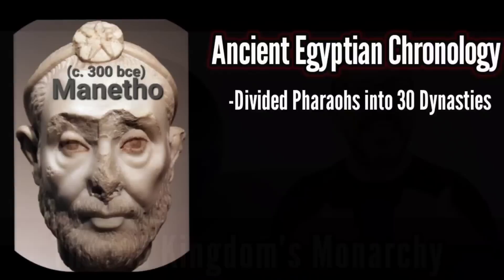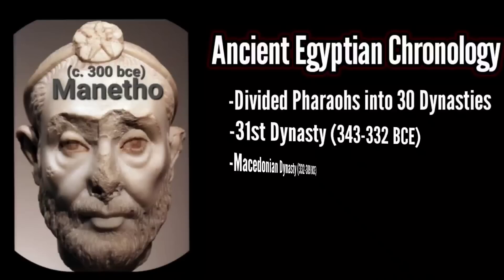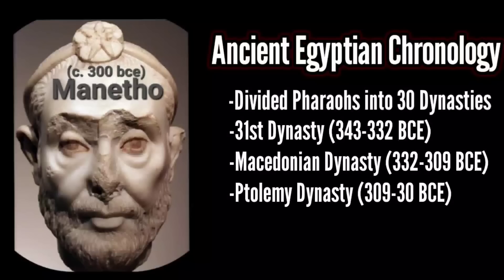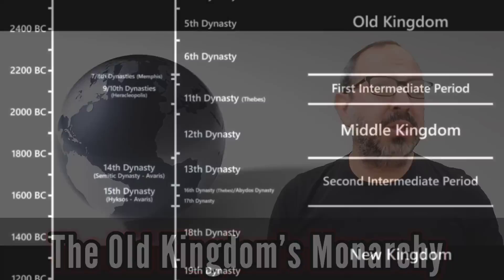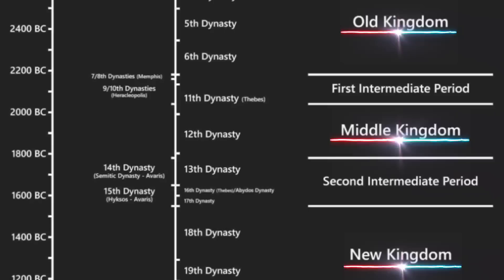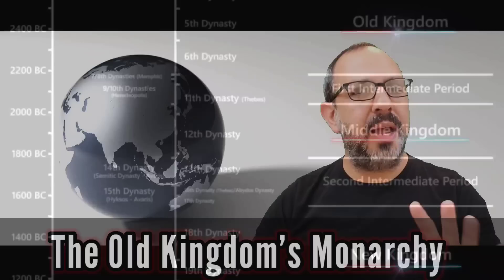Since ancient Egyptian history continued beyond Manetho's life, modern scholars have added the 31st dynasty, the Macedonian dynasty, and the Ptolemaic dynasty that ended with Cleopatra in 30 BCE. Egyptologists have organized these dynasties into mostly kingdoms and periods. Periods were times of disunity and chaos, while kingdoms were times when Egypt was united under a strong monarchy and the pharaoh was maintaining divine harmony on earth under the idea of Maat.